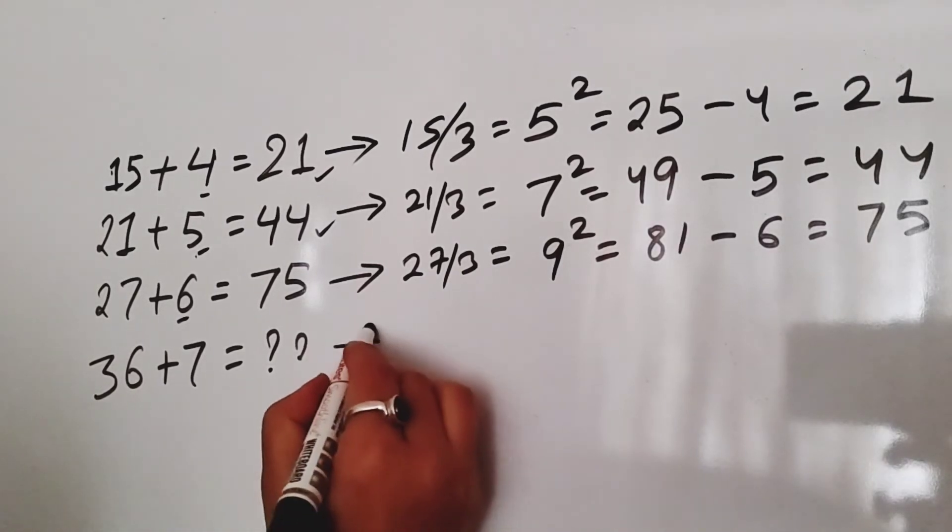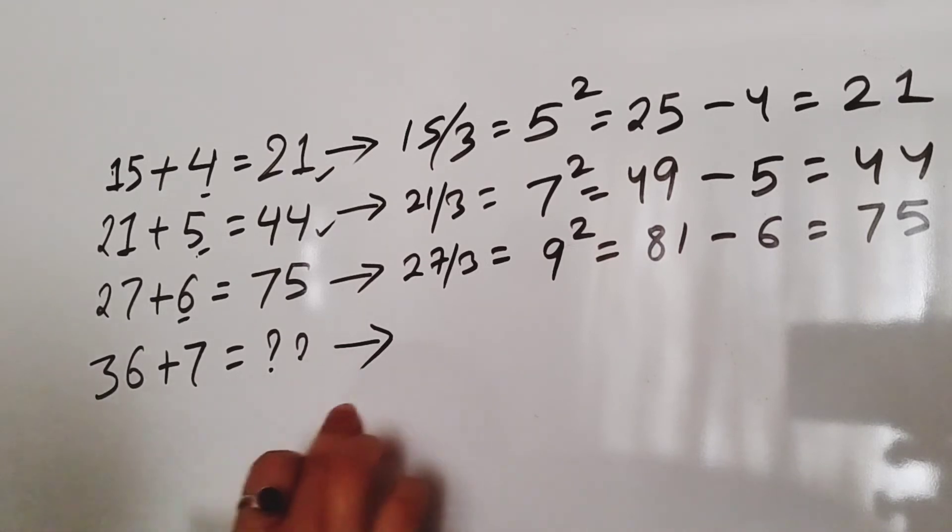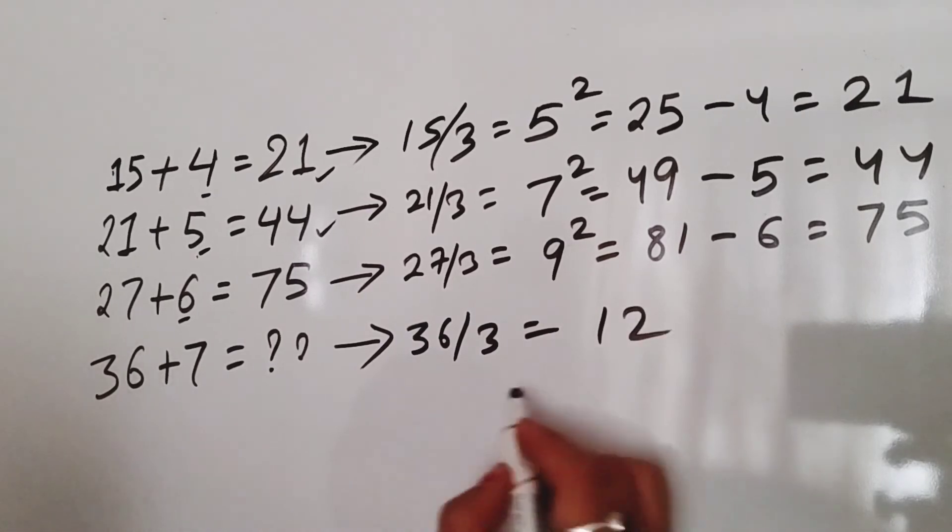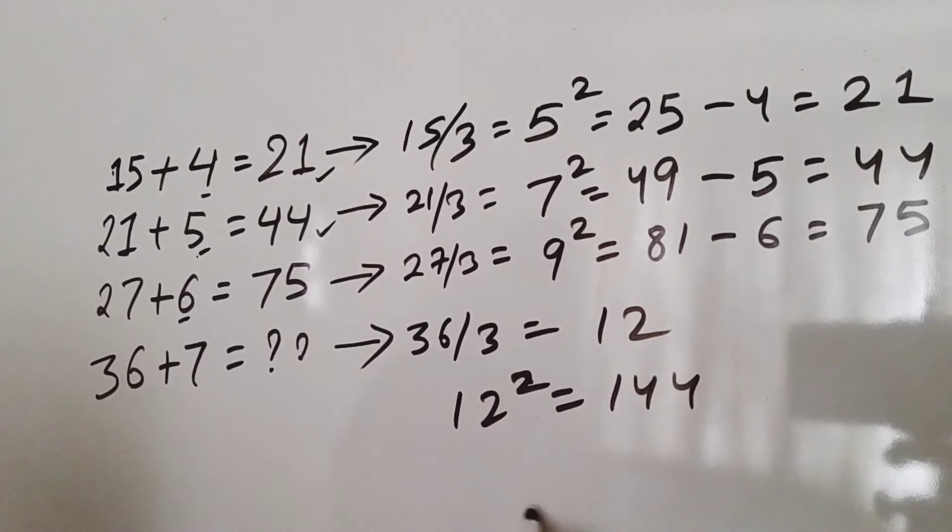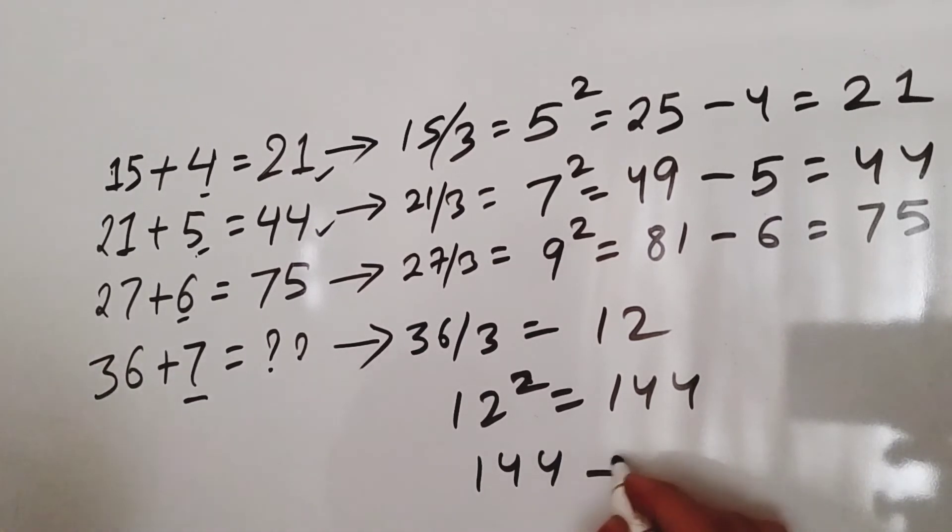Right friends, you can see we will follow the same pattern for the next row. 36 divided by 3 is 12. 12 squared is 144. We have to minus the second number which is 7. 144 minus 7...